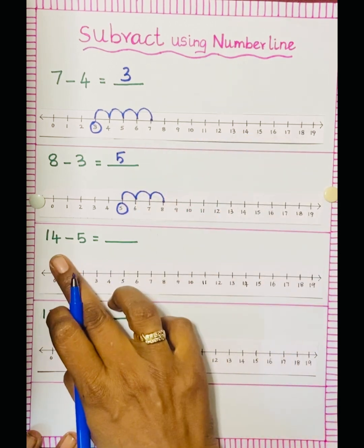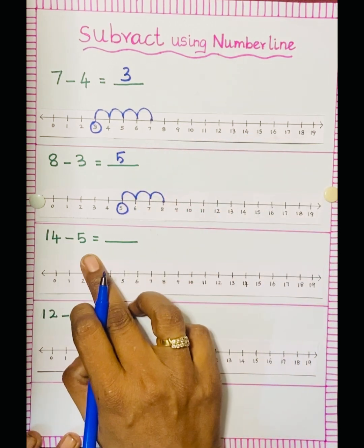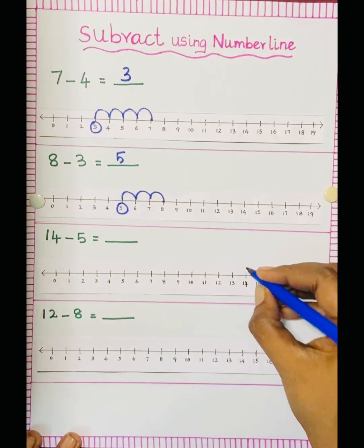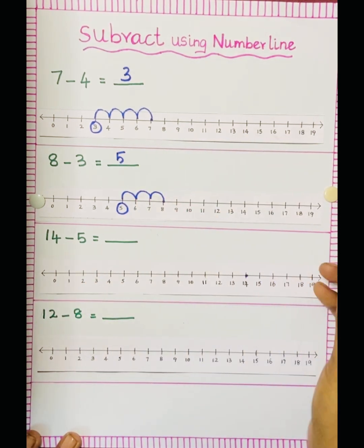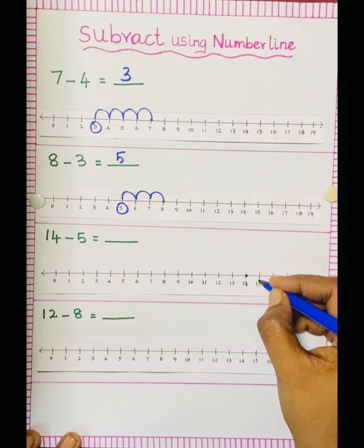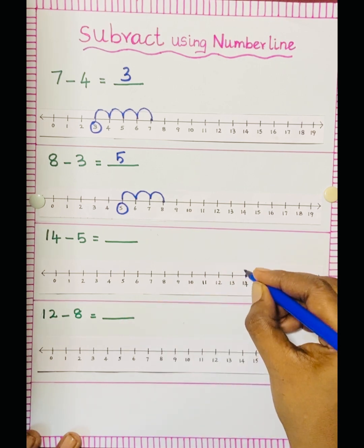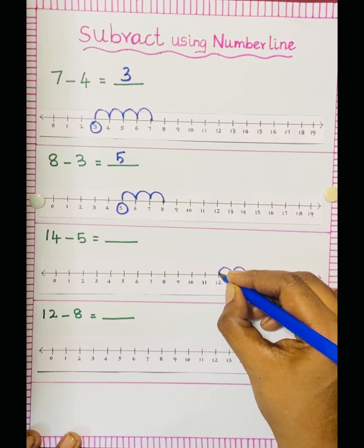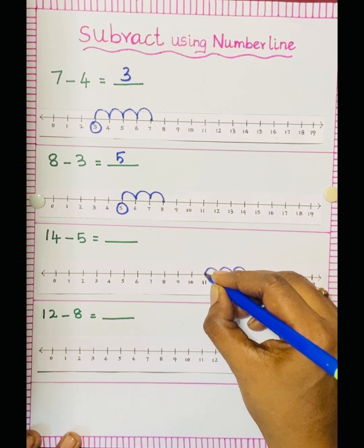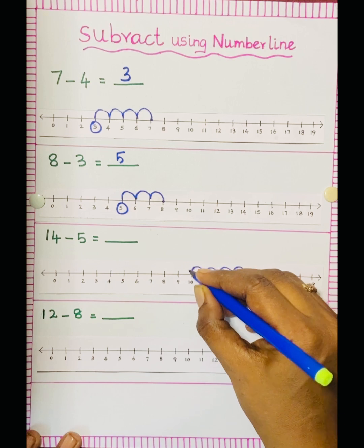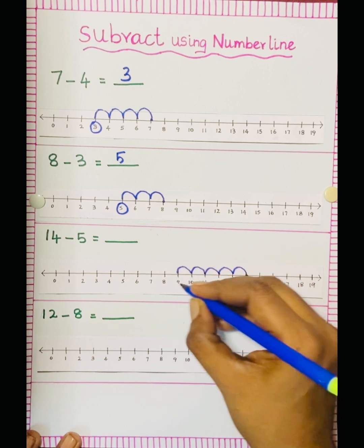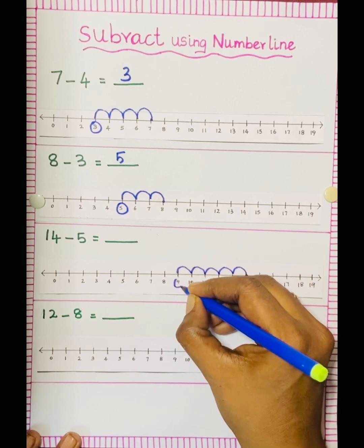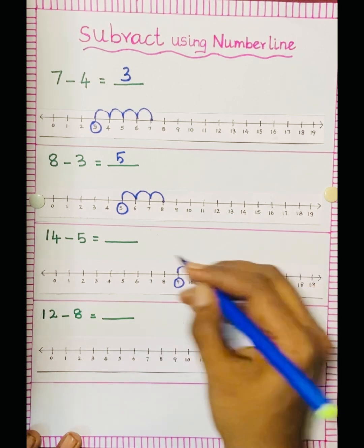Next: 14 minus 5. So we have to keep the dot at 14, then move to the left side, 5 jumps: 1, 2, 3, 4, 5. See, the answer is 9.